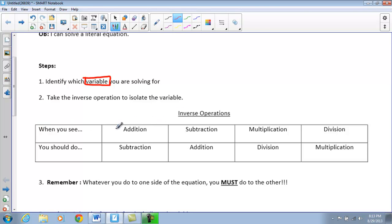So, once again, when you see addition, you should do subtraction. When you see subtraction, you should do addition. When you see multiplication, you should do division. When you see division, you should do multiplication in order to isolate that variable.